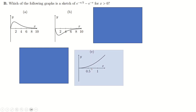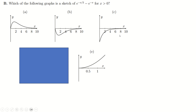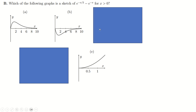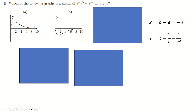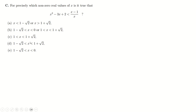Why is E gone? Because it wasn't at the origin, of course. Now, what's the main difference between the remaining graphs? Well, one of them is positive all the time, one of them is negative. So let's just try x = 2: we get 2e to the minus 1 minus e to the minus 2, which is 1/e minus 1/e². Since 1/e² is clearly smaller than 1/e, this is a positive number, so the graph is definitely A.